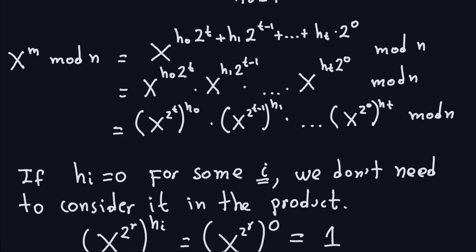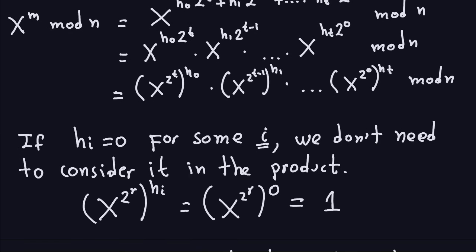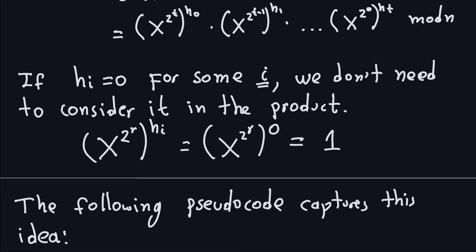So basically, the 1s of the binary representation of my exponent are the only ones that matter. If h_i is 0, the term just gives 1, so in the product we only consider the positions that have 1s. The pseudocode captures exactly this idea: whenever you have a 0 in the binary representation, its weight in the multiplication is nothing — you just multiply by 1.